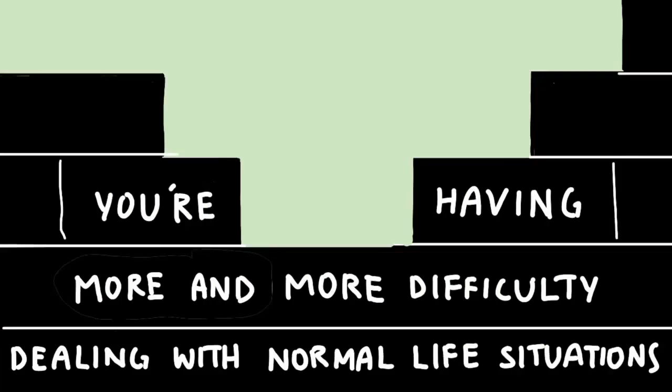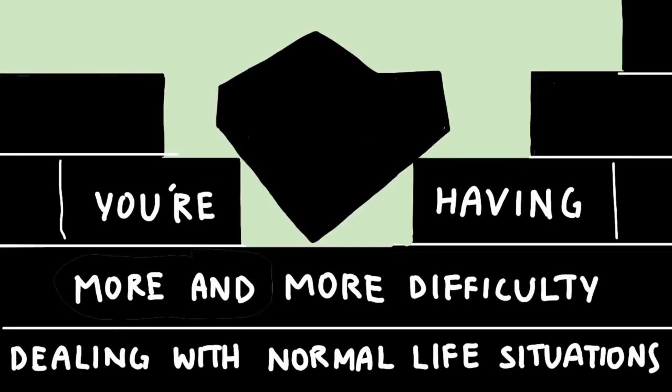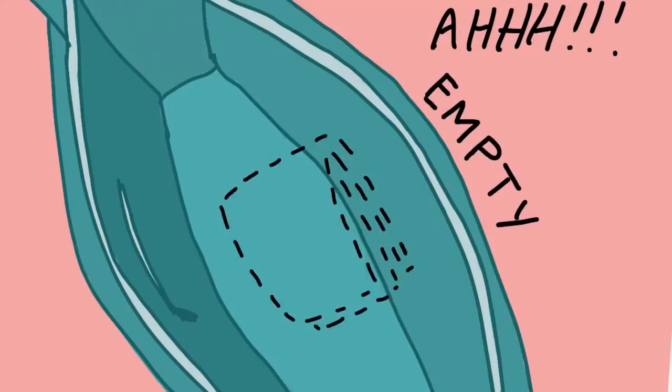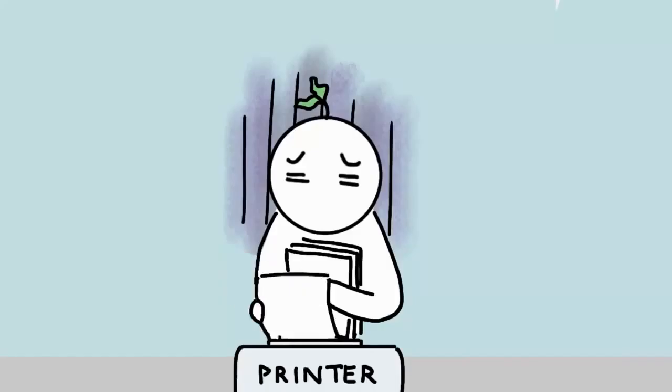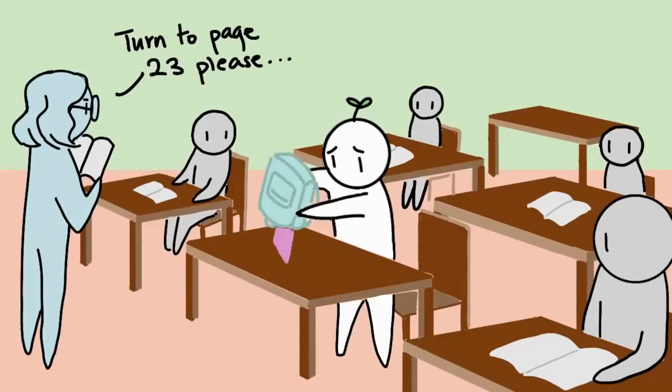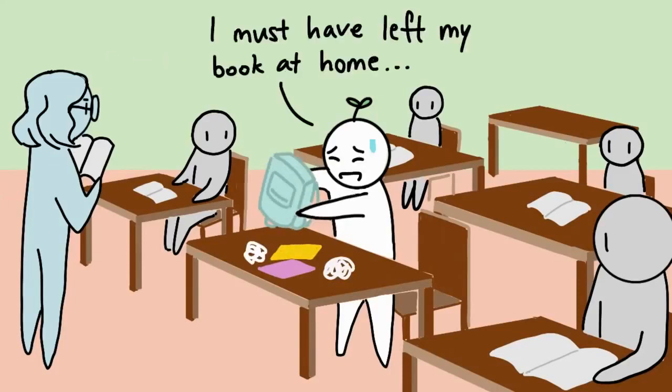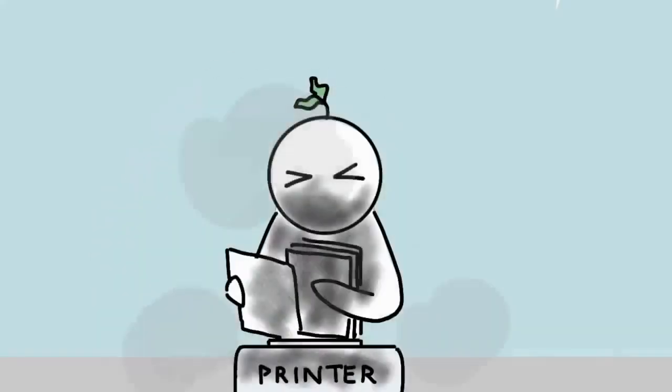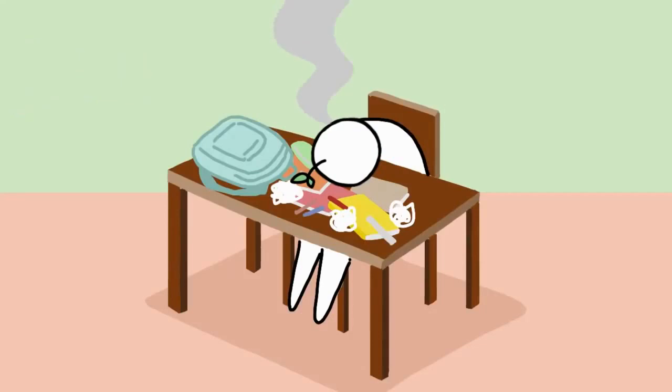Number six: You're having more and more difficulty dealing with normal life situations. Have you ever gone through a time in your life when nothing seemed to go right and you just couldn't deal? The Australian Department of Health stated a rough patch that you just can't get past, one that hurts your ability to function for more than two weeks to two months, may be a sign of depression or anxiety. A major sign that what you're experiencing is more than just a rough patch is when you have a hard time functioning in normal situations for several weeks, according to Mental Health America.